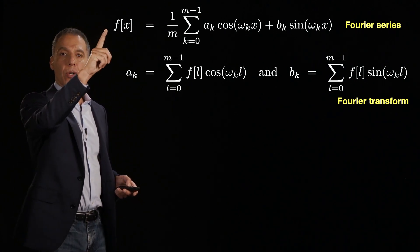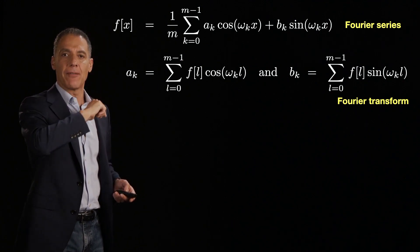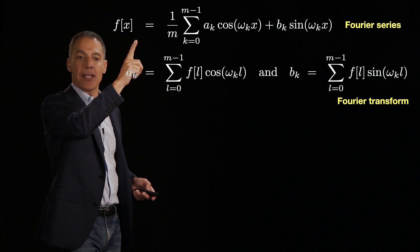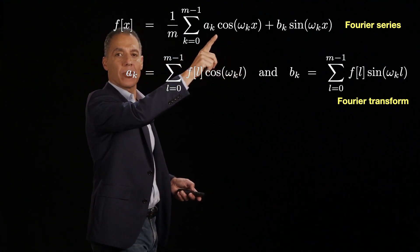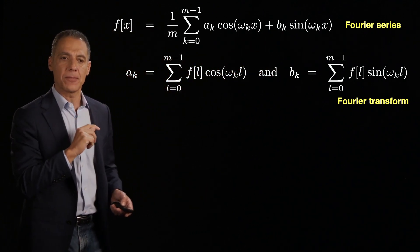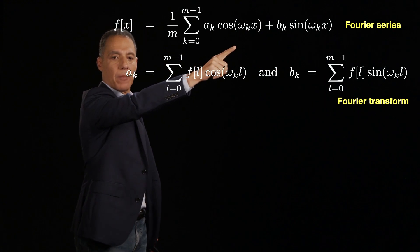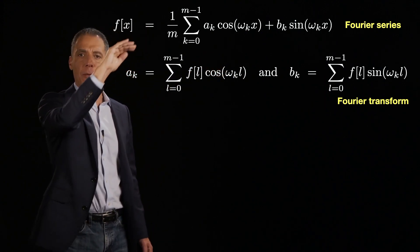So let me remind you where we were last time. We said that if we have a periodic signal, f(x), we can write it as a sum of scale a_k and b_k, cosines and sines each of zero phase. And obviously increasing frequencies from low frequency to high frequency. That's the Fourier series.